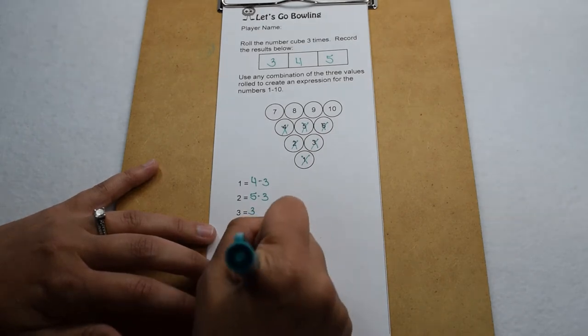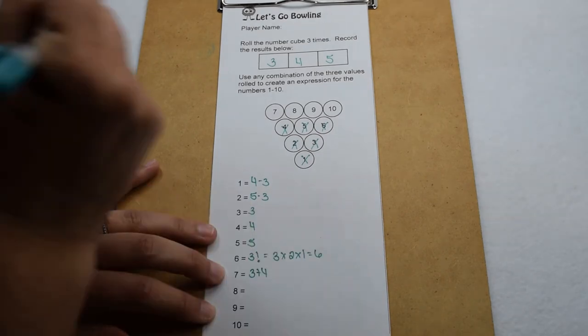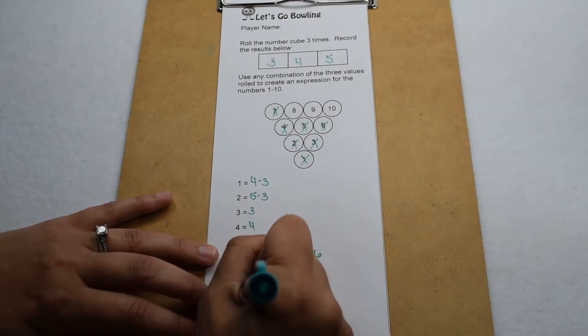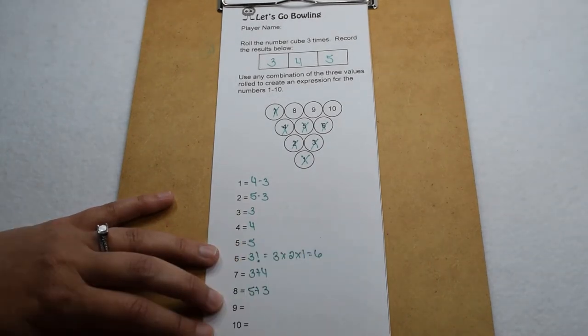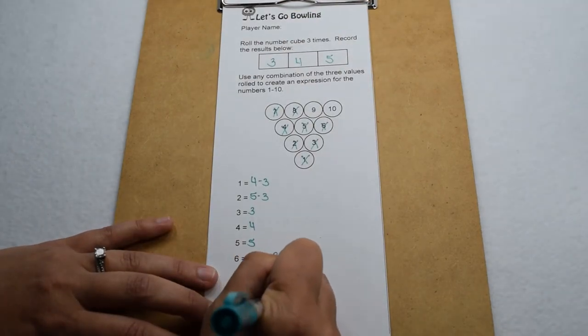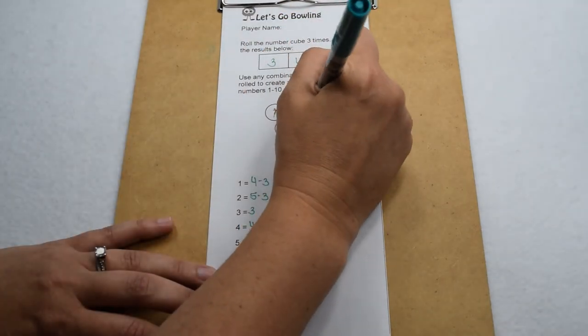For seven, we can go back to addition. There's three plus four, and that gives me seven, so I can knock down that pin. Same thing for eight. I can go back to addition and do five plus three. That gives me eight, knock down that pin. And for nine, I can do five plus four, and knock down that pin.